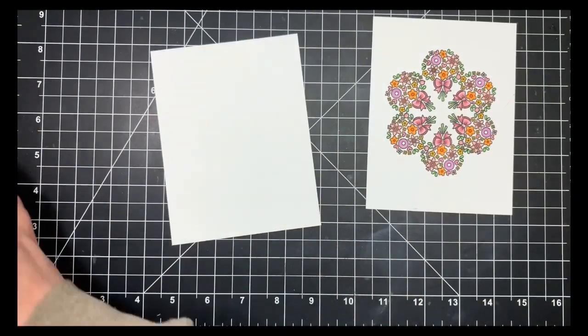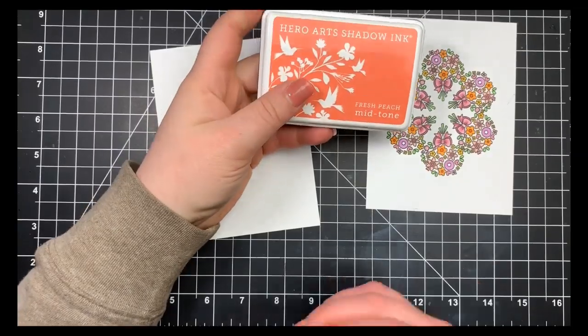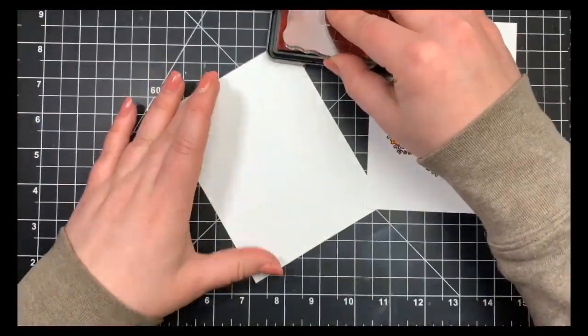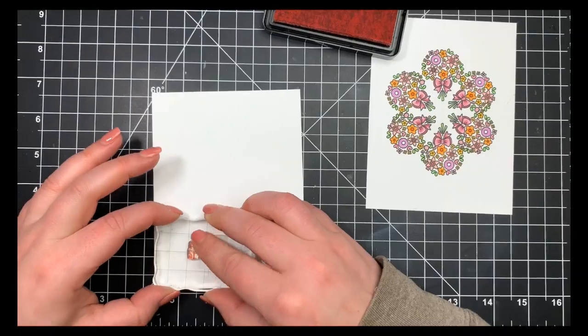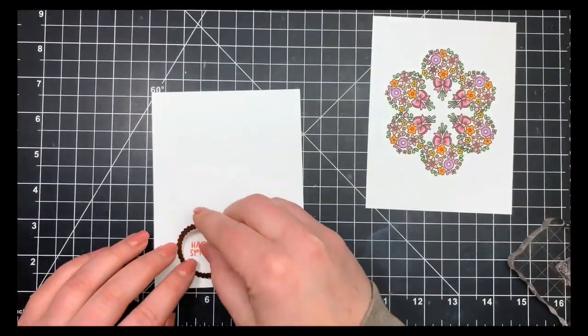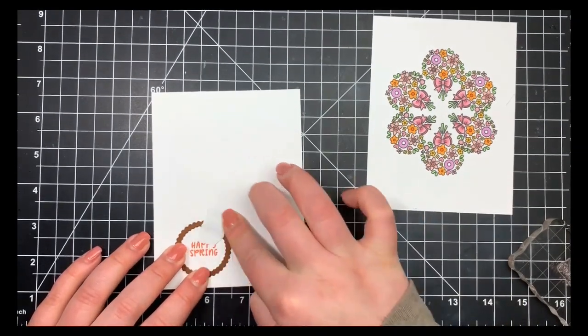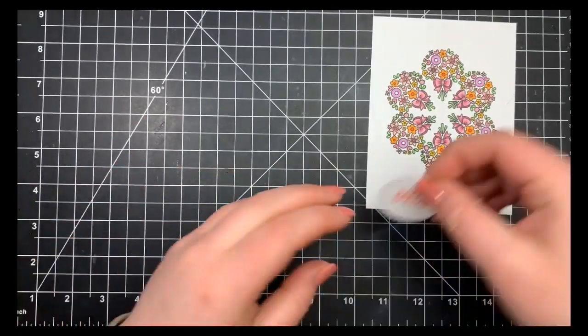Once all my coloring was complete, we'll move on to the sentiment. I'm stamping this out onto another piece of Nina Solar White using Fresh Peach ink by Hero Arts, because I felt like this matched a lot of the colors I used within the bouquets. I'm going to stamp that out and then take that same Spellbinders die, center it around my sentiment.